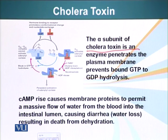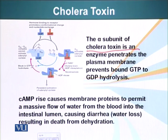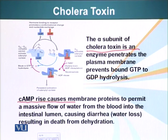Because cholera toxin prevents GTP hydrolysis, the alpha subunit remains active far longer than normal. This results in a sustained rise of cyclic AMP, leading to a massive flow of water from the blood into the intestinal lumen, which causes severe diarrhea and water loss that can ultimately result in death.